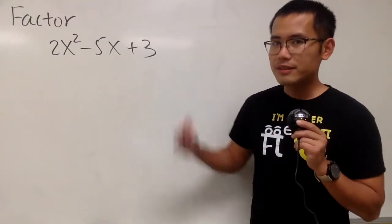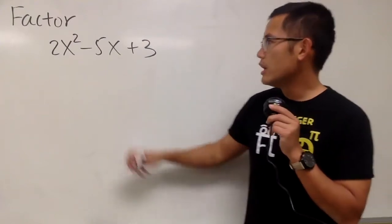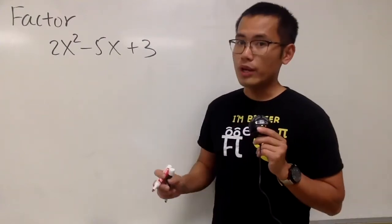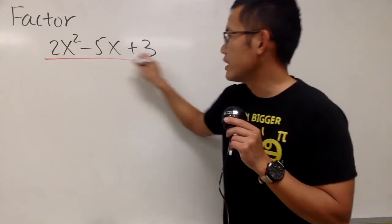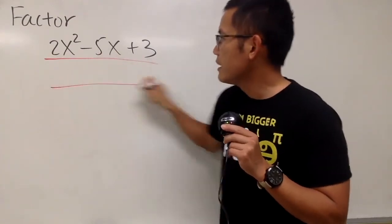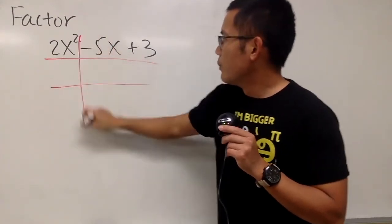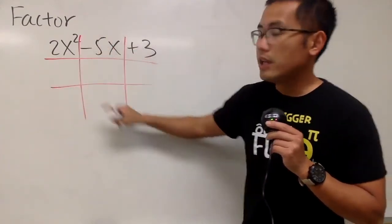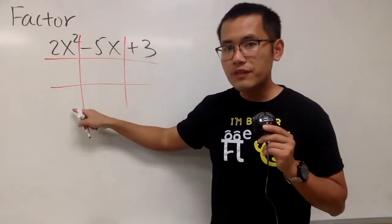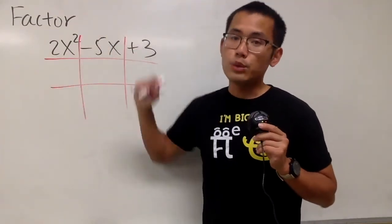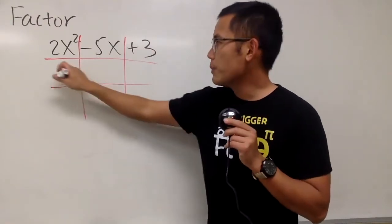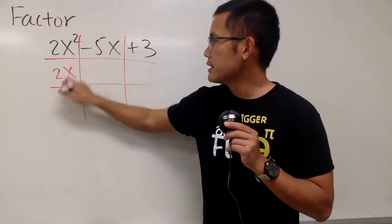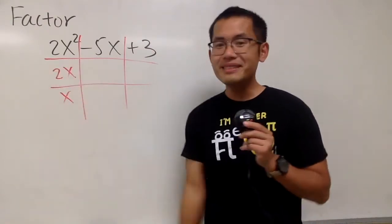Welcome to Factor This Expression. Notice that this is a trinomial, so let's go ahead and use the tic-tac-toe method. What times what gives us 2x squared? The combination for that will be just 2x times x.